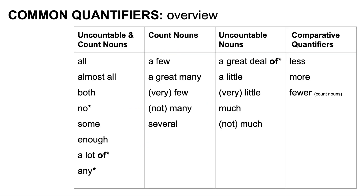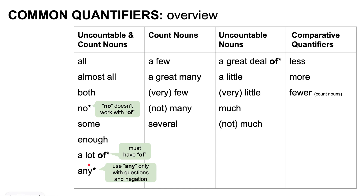Here is a quick overview of the quantifiers we will look at today. Quantifiers that work with countable and uncountable nouns are: all, almost all, both, no (which doesn't work with 'of'), some, enough, a lot of (which must have 'of'), and any (used only with questions and negation). For count nouns: a few, a great many, very few, not many, and several. For non-count nouns: a great deal of (must have 'of'), a little, very little, much, and not much. We will also look at comparative quantifiers: less, more, and fewer — which only works with count nouns.